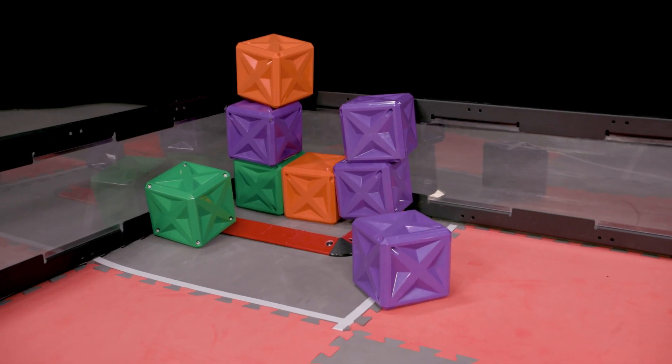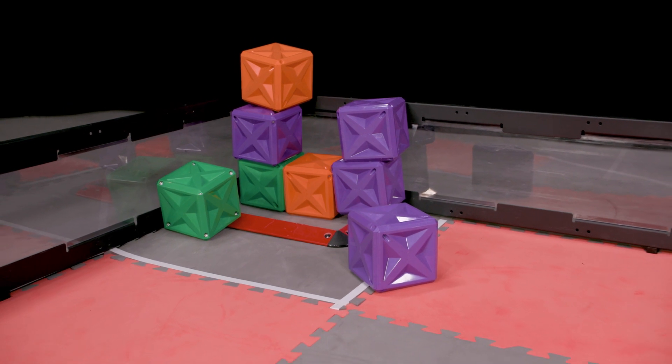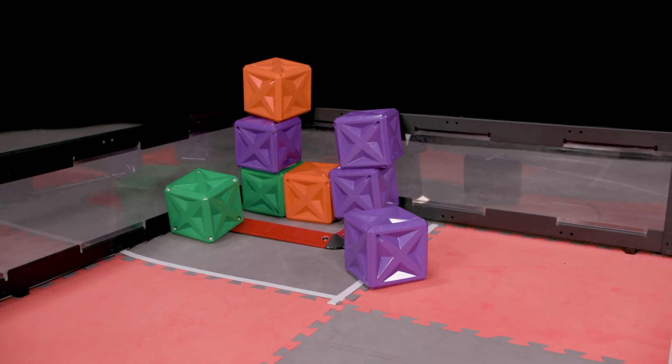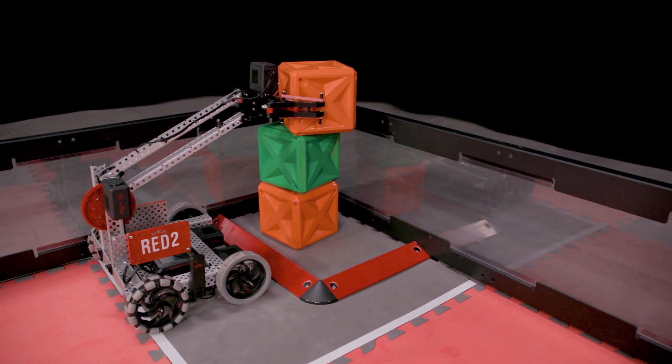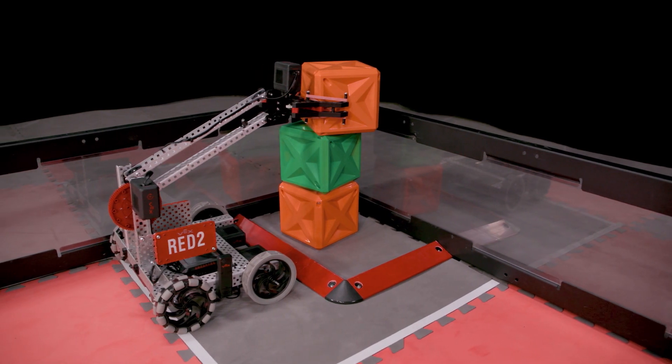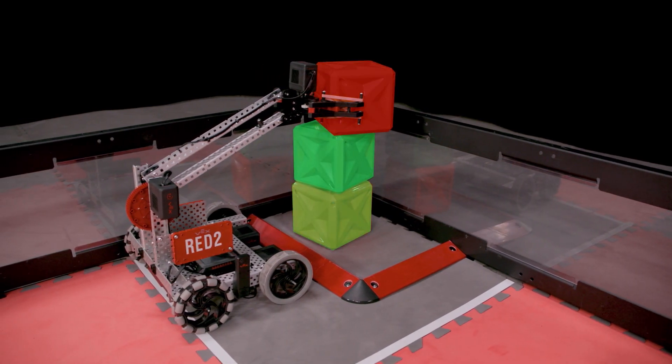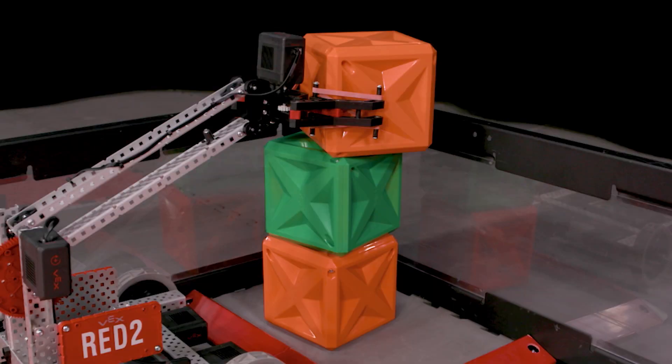Now that we've established how the point values of cubes are determined, it's time to figure out how cubes are counted as scored. A cube is considered scored at the end of the match if it is not contacting a robot of the same alliance color as the goal zone in which it was placed and if it meets the criteria of being a base cube or a stacked cube.